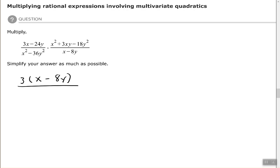And the first denominator looks like we have difference of two perfect squares, so x plus 6y times x minus 6y.